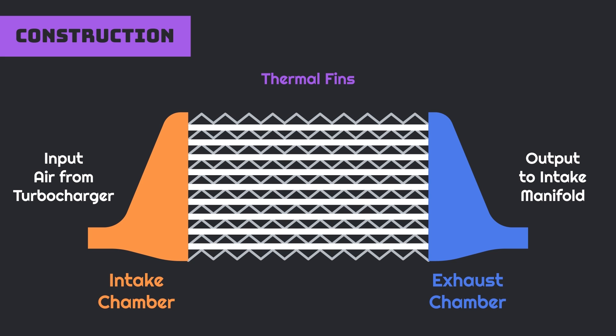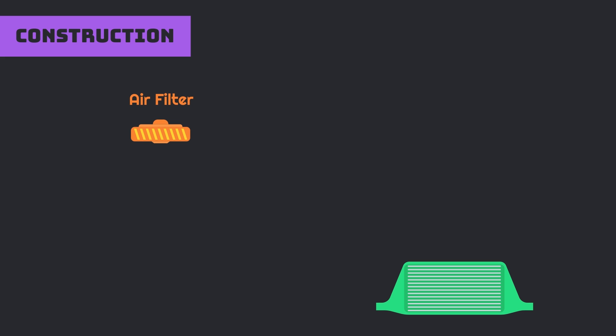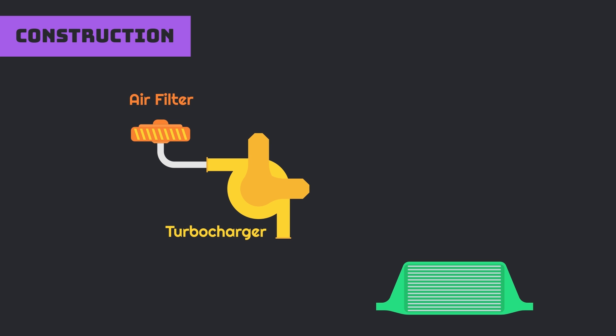These fins increase the thermal capabilities of the intercooler by increasing the contact area with the atmosphere. In the circuit of the intercooler, the first component is the air filter. The air filter is connected with the turbocharger. The turbocharger then advances to the intercooler, which is connected with the intake manifold.